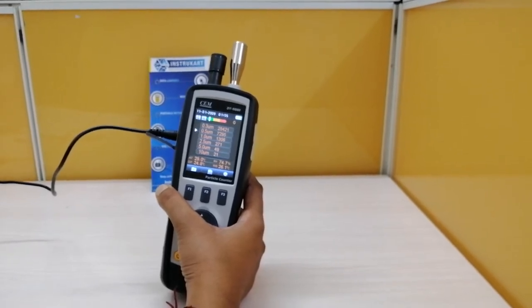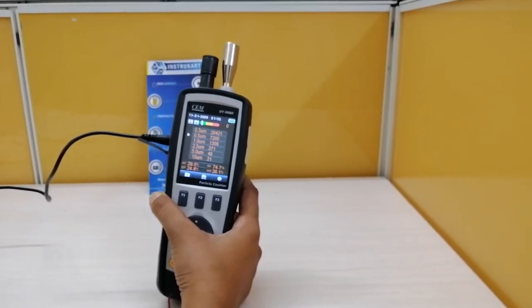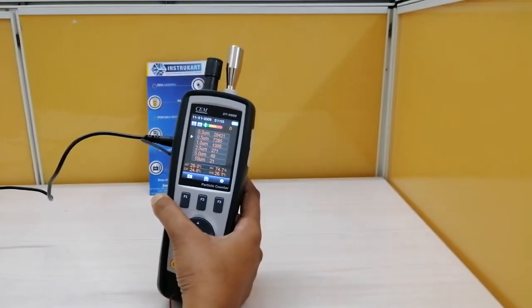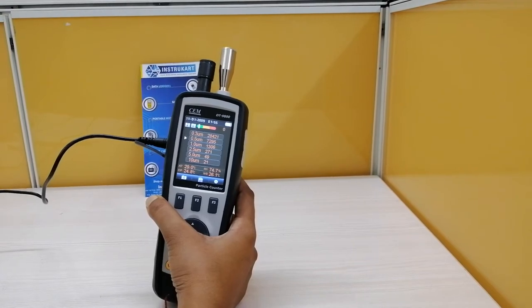...then the counts associated with each channel size would indicate the number of particles that are at least that micron size in diameter but not including the next size.